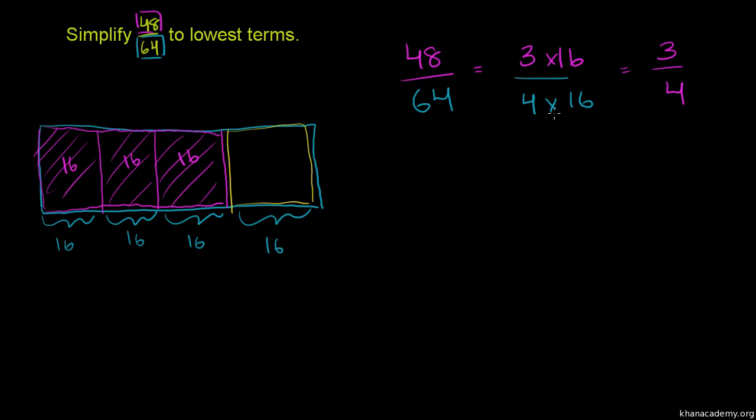And hopefully you see kind of a mathematical way of immediately thinking about it. If you can factor this out, and you can actually factor out its greatest common factor. So 48 is 3 times 16. 64 is 4 times 16. And then these cancel each other out. You could view this. This is equivalent to 3 over 4 times 16 over 16. This is the same thing as that. And 16 sixteenths is 1. And you're just left with 3 over 4.